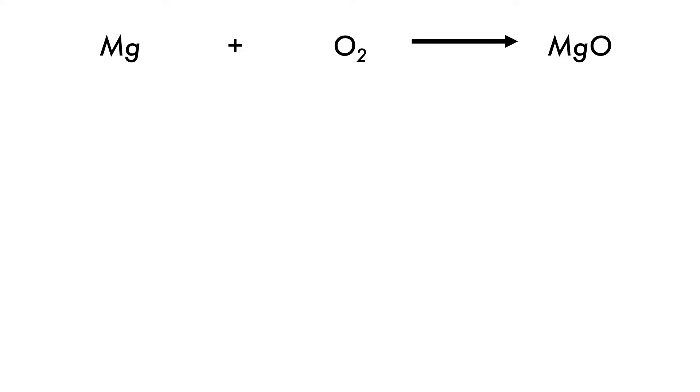Let's try to balance the reaction. It's not balanced. So first of all, we need to consider the number of atoms of each element on both sides of the arrow.